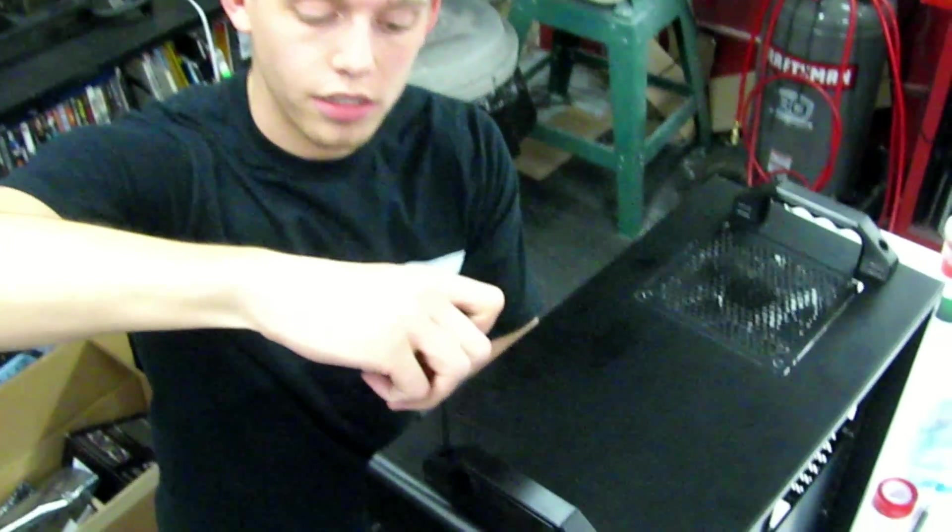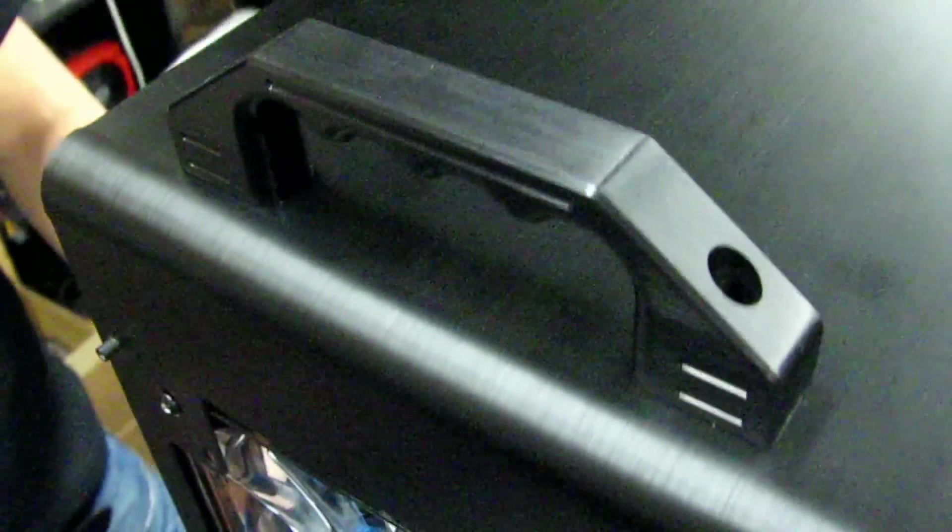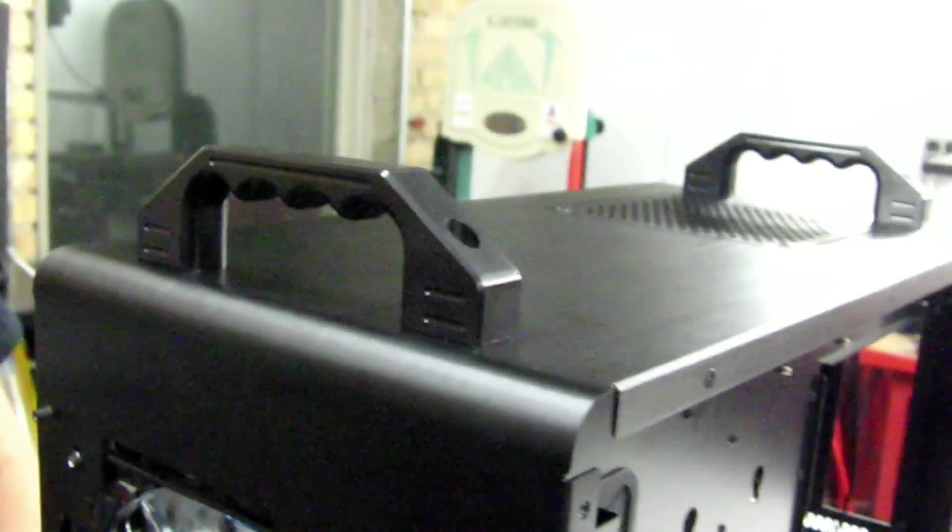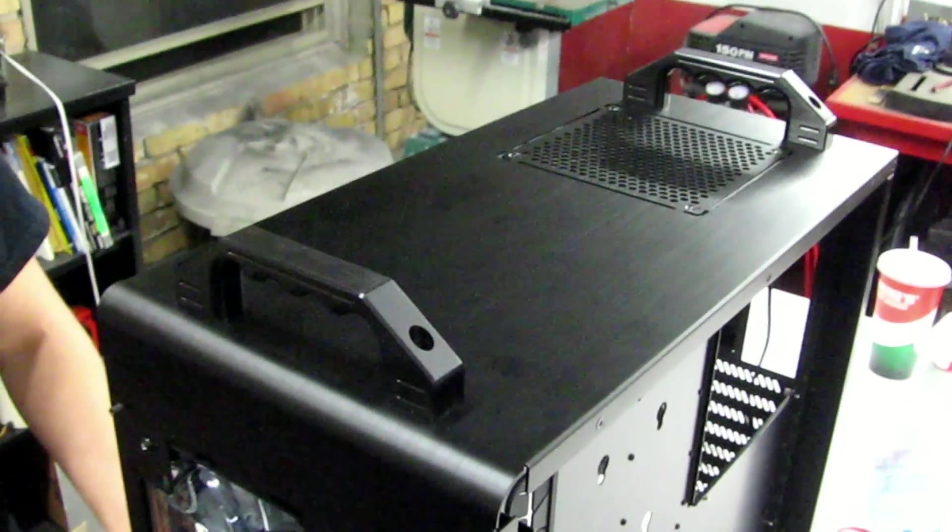I'm using an Allen head wrench to finish tightening the fasteners for the case handles. As you can tell, these handles match the finish very nicely. The next step is just to finish up the front panel.